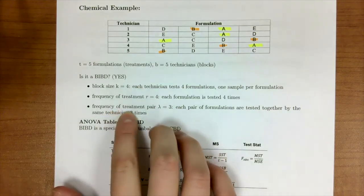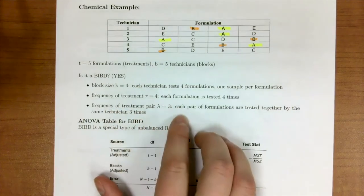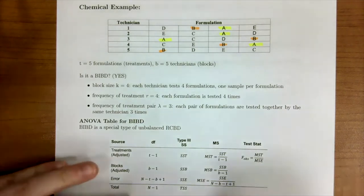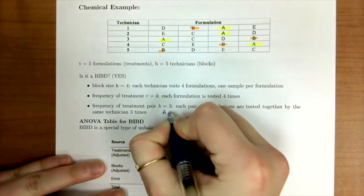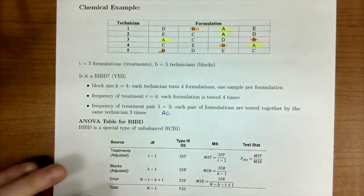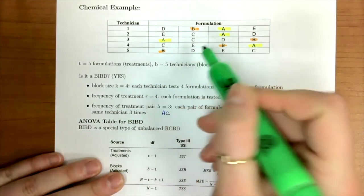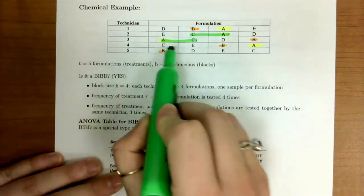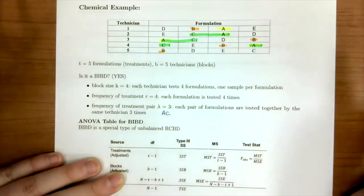Now the frequency of treatment pairs is three. So each pair formulation are tested together. And what I mean by that is let's consider treatment pair a, c. We're going to find every pair that the technician uses a, c. So our green highlighter, a, c, a, c, and a, c.